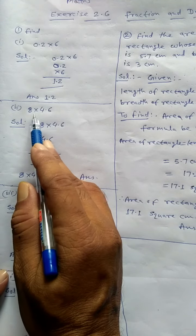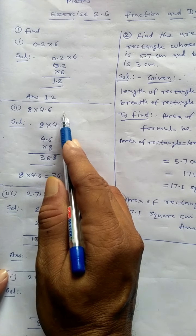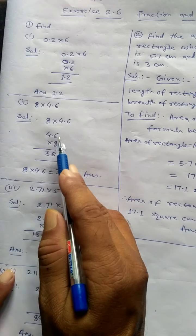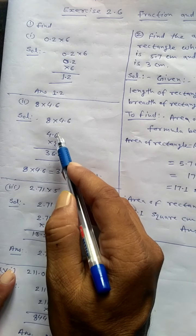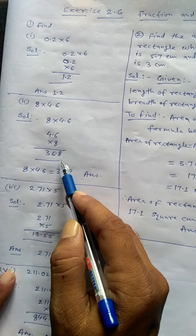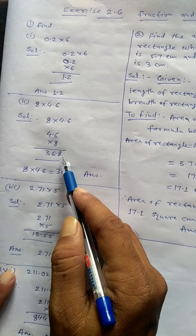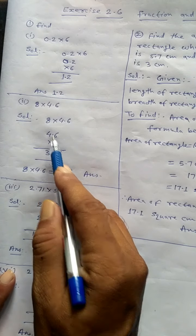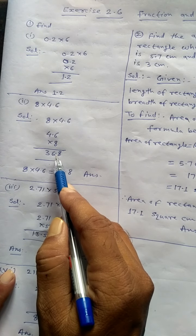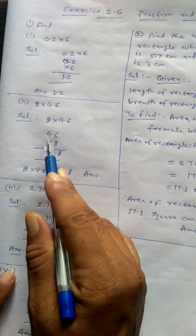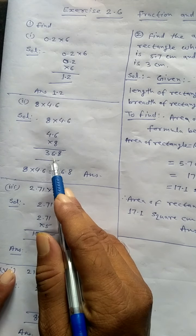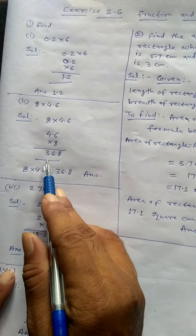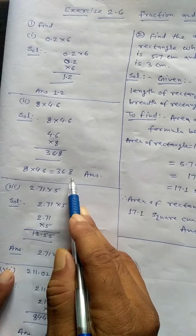Second: 8 into 4.6. Solution: 8 into 4.6, same as 4.6 into 8. 8 sixes are 48, write 8 carry 4. 8 fours are 32 plus 4 is 36. Therefore the answer is 36.8.